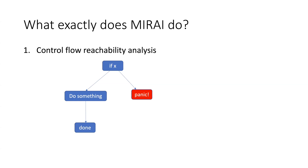What does Mirai actually do? It's essentially just a reachability analysis. It does control flow reachability — so basically, if there is some way starting from a starting point to flow through the program to a panic, it will tell you about it and say: hey, do you know your program can panic if you follow this path?